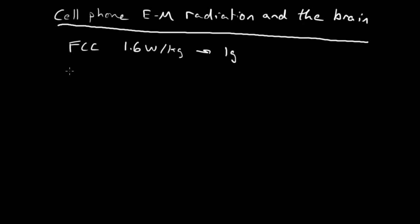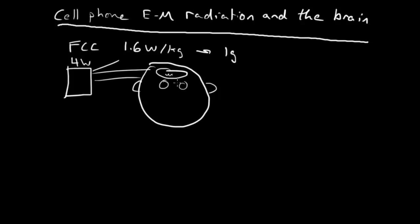To go from our cell phone, which I'm going to model as something emitting at its peak power at 4 watts, all the way to the end user, the ear, the brain, how much of that energy will make it into the brain and be dissipated over 1 gram, and we'll determine if that's less, greater than or less than 1.6 watts.